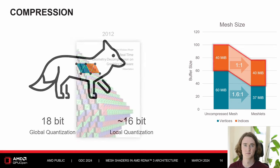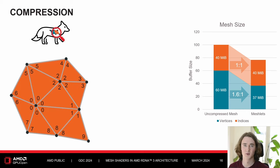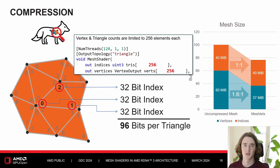Now the index buffer is the largest part of our mesh, so let's address that. Index buffer compression itself is nothing new — there are countless techniques described in a 2012 dissertation — but most couldn't be applied to the traditional vertex shader pipeline because the input assembler is a limiting factor. In this joint work with Coburg University, we'll bring some of these advanced index compression techniques to mesh shaders. Since we're using meshlets with a maximum of 256 vertices, we can easily swap 32-bit indices for 8-bit indices, reducing triangle size to just 24 bits — a 4-to-1 compression ratio.